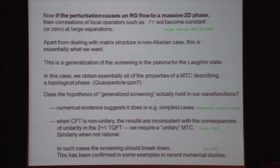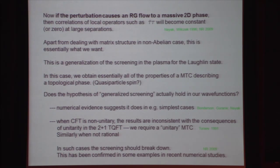The question is whether the generalized screening hypothesis actually holds in our wave functions. Various kinds of numerical evidence suggest it holds in simple cases. Work by Bonderson, Gurarie, and Nayak followed with similar arguments using additional mappings available in some conformal field theories. There's an important caveat: if the conformal field theory is non-unitary, what you get under the hypothesis is inconsistent with some consequences of unitarity in the 2+1 theory. Assuming the structure of a modular tensor category, Turaev introduced the unitary modular tensor category, requiring positivity in the quantum mechanical Hilbert space of the 2+1 system.